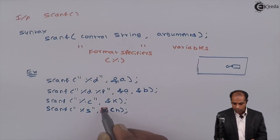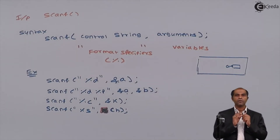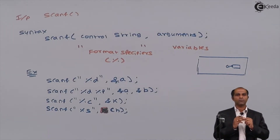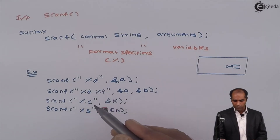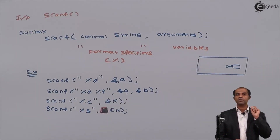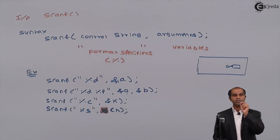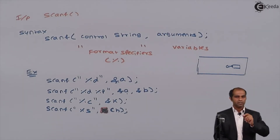In some cases it is advisable to remove the ampersand symbol. When using %s for a character array, the ampersand symbol should be avoided. With normal variables like a, b, or k, you extract the address using ampersand. But ch is not a normal variable — ch is an array. When it is an array, you should avoid using the ampersand symbol, because the name of the array itself indicates the address of its location.